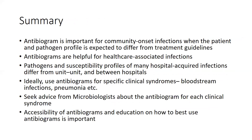In summary, antibiograms are important for community-onset infections when you have a patient or pathogen profile expected to differ from general treatment guidelines. They are very helpful for healthcare-associated infections, where pathogens and susceptibility profiles differ from unit to unit and between hospitals. Ideally one wants access to a unit-specific antibiogram, and one that is specific for a clinical syndrome will yield more robust data than a general antibiogram. We also need to consider how to optimize accessibility of these antibiograms at the clinical interface and best incorporate them into empiric antibiotic selection decisions.